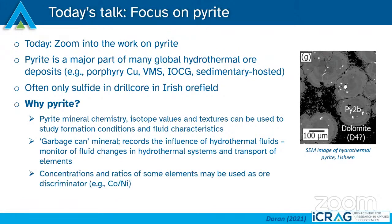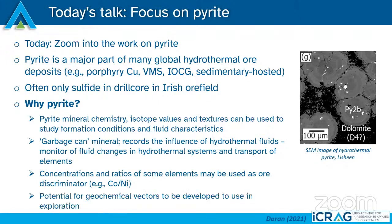There are lots of studies and different techniques that can be used in relation to mineral chemistry for pyrite. People have been using concentrations and ratios of elements like cobalt and nickel as ore discriminators to look at source fluids, and there's also a strong potential for geochemical vectors to be developed in exploration.